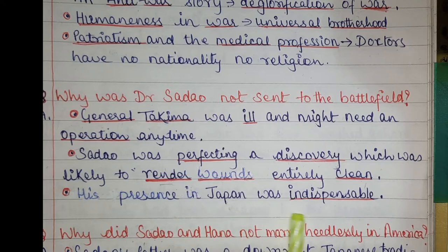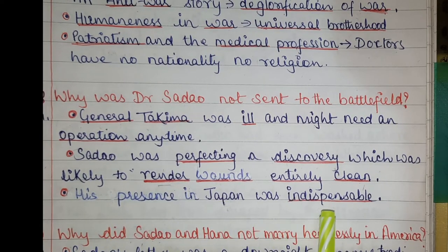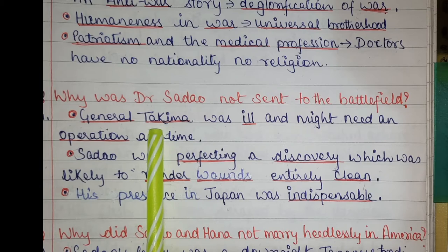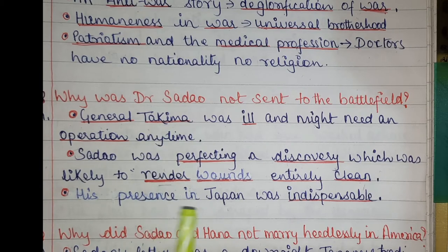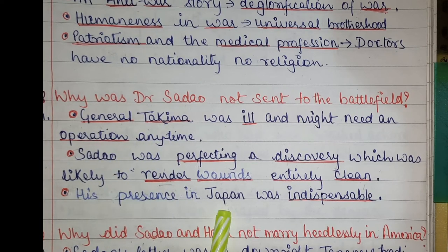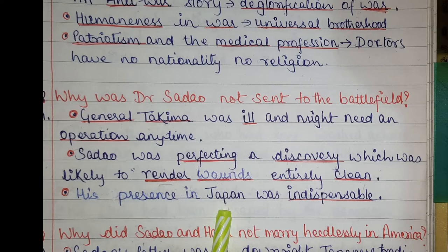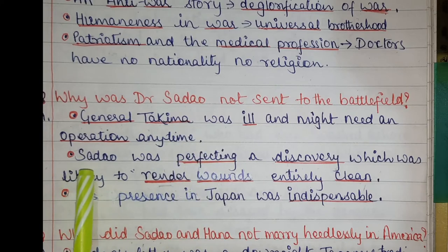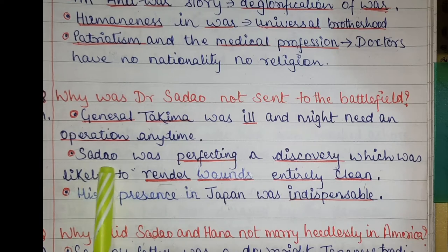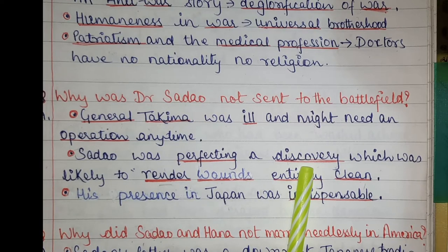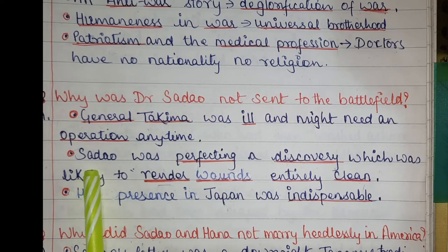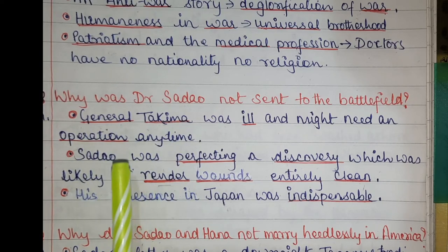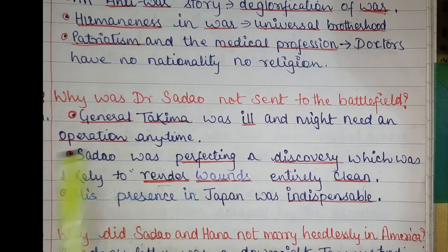His presence in Japan was indispensable — meaning extremely necessary. General Takima had won so many wars and battles for Japan, and in his generalship Japan was able to receive many victories. Dr. Sadao was the man saving the life of General Takima, so Sadao was given great importance. He was doing discovery work and was not taken away from General Takima, because if Dr. Sadao did not treat General Takima, then Takima might die. That was the concern, and therefore Dr. Sadao remained in Japan.